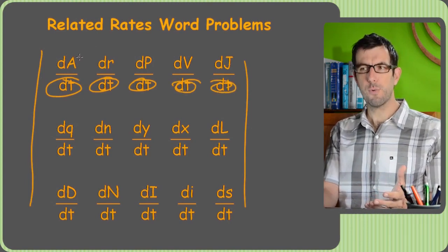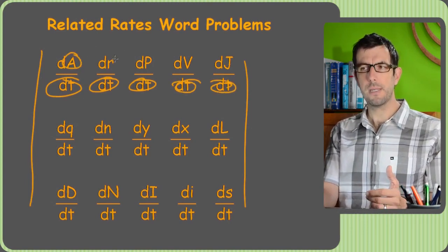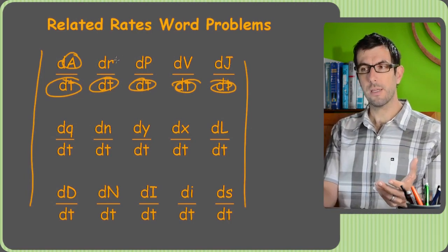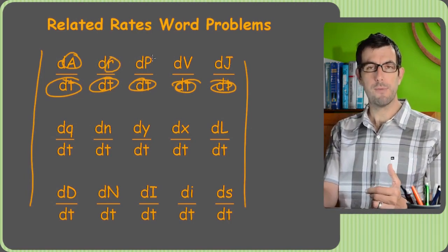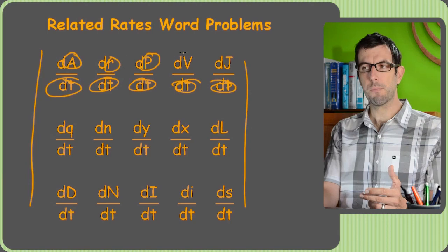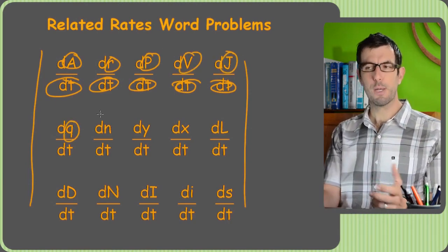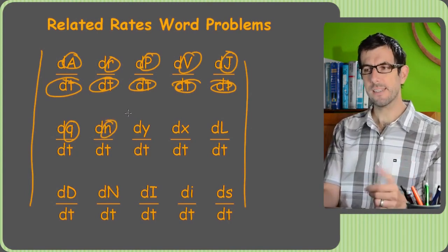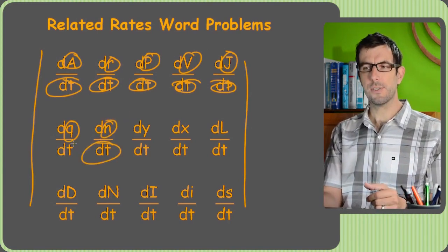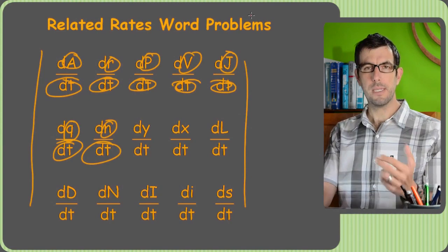You notice all these letters are ones I made up. dA/dt could mean the rate of change of area. dr/dt could be the rate of change of radius. p could be pressure, v could be volume, j could be javelin throws, q could be quantity, n could be number of things. But because they have t downstairs, that means the units are going to be in time.